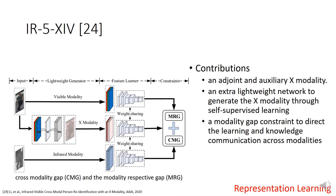The fifth work is Infrared-Visible Cross-Modal Person Re-Identification with an X-Modality in AAAI 2020. The method proposes an auxiliary X-modality. A lightweight generator outputs X-modality images, and the three modalities are fed into a weight-sharing cross-modal feature learner. Two constraints are designed: the cross-modality gap CMG and the modality respective gap MRG constraint, where the MRG is indeed the intra-modality discrepancy.